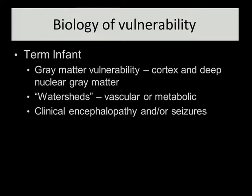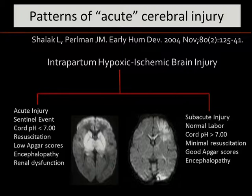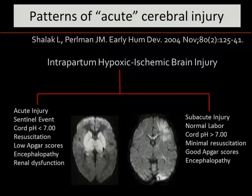When we look at the term-born infants, this group has a particular vulnerability within the gray matter — specifically the cortical and deep nuclear gray matter. Their lesions are often so-called watersheds, which are either vascular or metabolic. That impact on the gray matter means these infants often present with impaired mental state or encephalopathy and/or clinical or electroencephalographic seizures. These are the two common patterns described on MR imaging in relationship to acute encephalopathy presenting shortly after birth. On these DWI images, you can see brightness in the deep nuclear gray matter involving the thalamus, putamen, globus pallidus, and caudate, but no other region of the cortex — so-called isolated deep nuclear gray matter lesions.